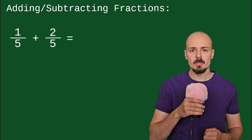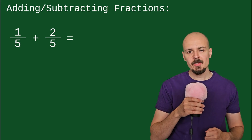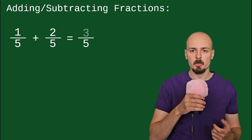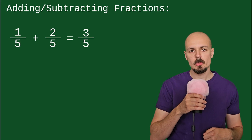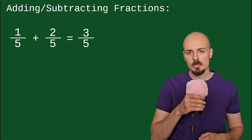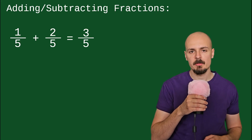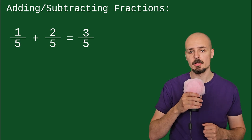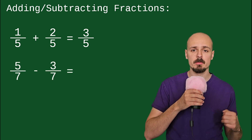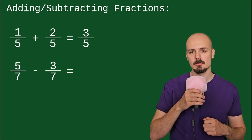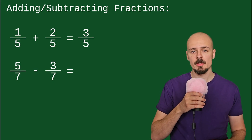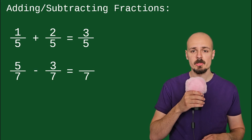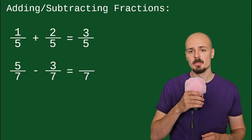1 fifth plus 2 fifths. To add these together, we simply keep the denominator the same and then add the numerators together. 1 plus 2 is 3, so our answer will be 3 fifths. When we're asked to subtract, it's the exact same idea. 5 over 7 minus 3 over 7 gives you an answer also over 7 — subtract the numerators and your final answer is 2 over 7.